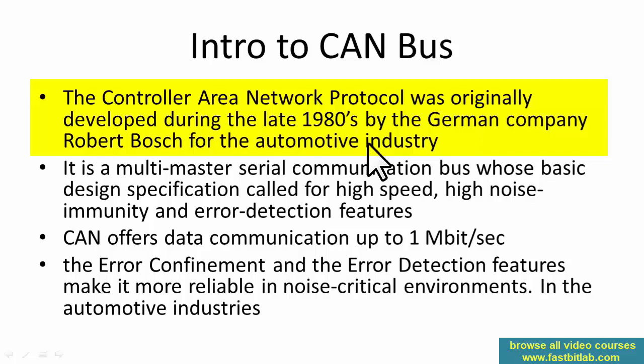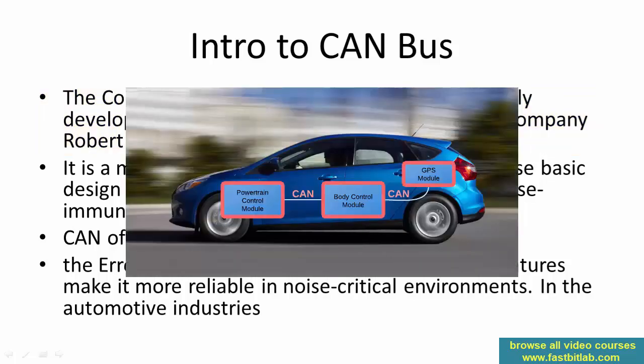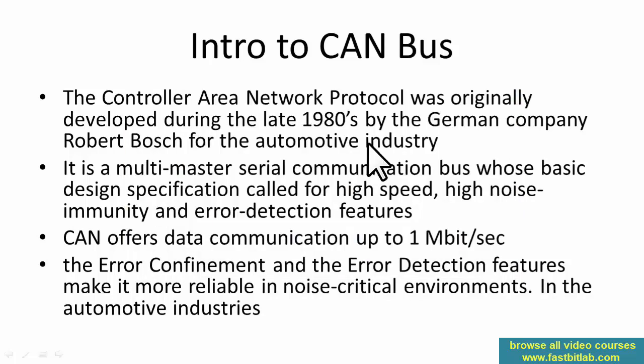A car has lots of control units — it has an air conditioning system, engine system, braking system, various sensors, etc. In order to communicate with all those units, they were looking for a reliable, more accurate, more robust communication method. You cannot use Bluetooth or Wi-Fi based communication to control various devices, because an automobile is a dynamic system and a noisy environment.